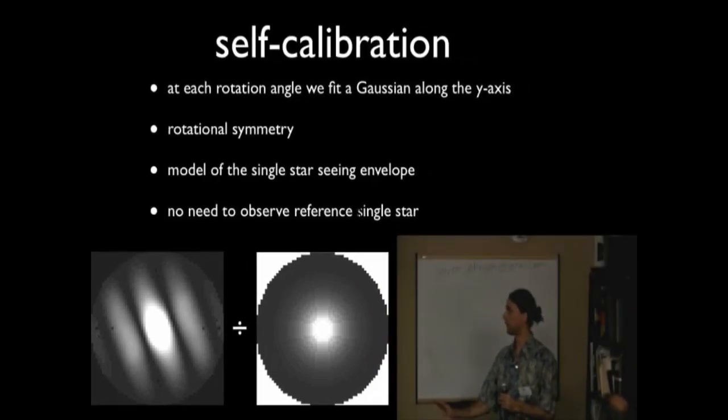I will say that it's probably better to observe a single star, but in a large program when you do this kind of robotically, that's difficult to do to observe a star that's the same air mass and get it all into your pipeline and your automation scheme. So this is a nice way to do it after the fact if you don't have reference stars.